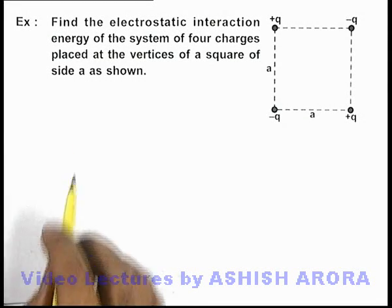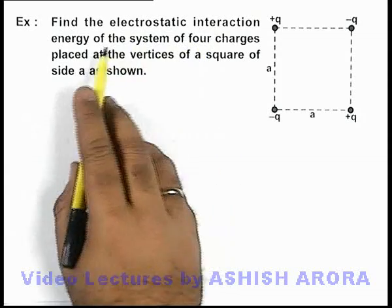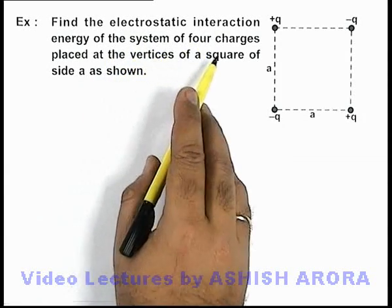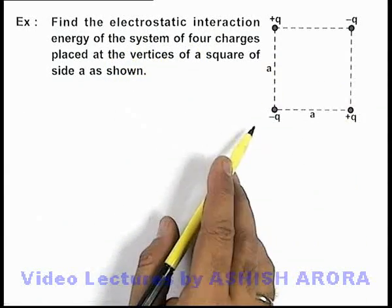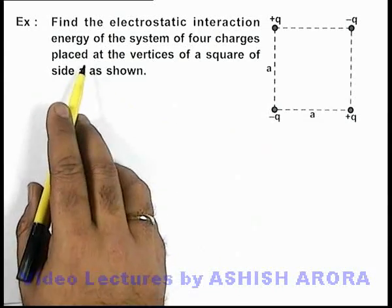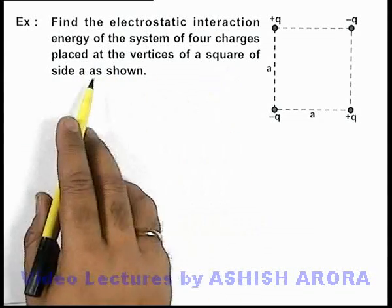In this example we are required to find the electrostatic interaction energy of the system of 4 charges, as we can see in the figure, which are placed at the vertices of a square of side a.